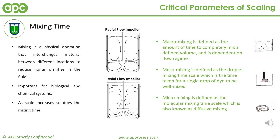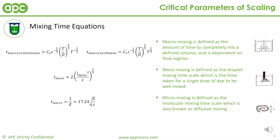Mixing is a physical operation that interchanges material between different locations to reduce non-uniformities in the fluid. It is an important parameter for biological and chemical systems. It controls culture temperature and the cell's access to dissolved nutrients and oxygen for biological systems, and can be the limiting step in chemical systems if the reactants are not suitably mixed. Mixing can be characterized on three different scales: macro, mezzo, and micro mixing, which correspond to the bulk liquid, droplet, and molecular scale respectively. As scale increases, so does mixing time.